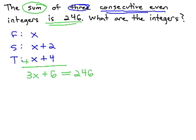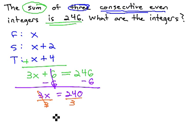We now have a two-step equation, which we can quickly solve to find that first integer x. Subtracting 6 from both sides tells us that 3x is equal to 240, and then dividing both sides by 3 tells us that x is equal to 80.